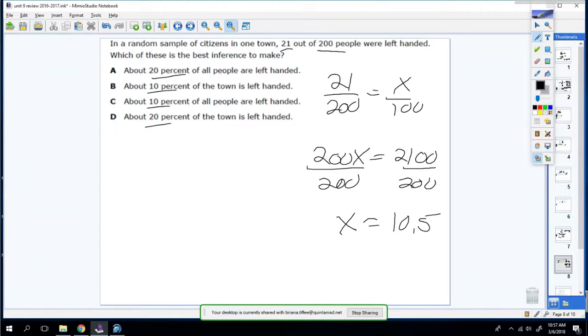So A says about 20 percent of all people. That means they're talking about the entire population in the world. We cannot make that inference. We're only talking about one town. So A is wrong. B says about 10 percent of the town. As of right now, that's correct because we're only looking at the town. C says about 10 percent of all people. Nope. We're not doing all people. And it says about 20 percent of the town is left-handed. No, because it's not 20 percent. It's about 10 percent. So the answer is B.